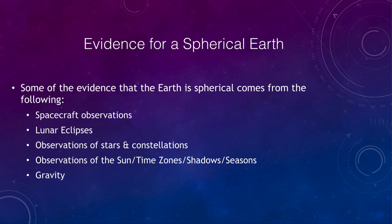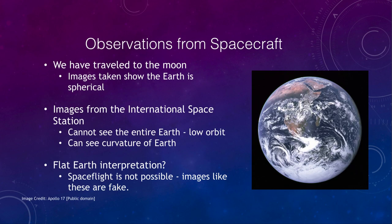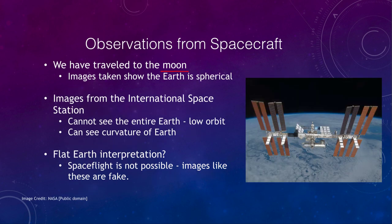Let's first look at what observations we have from spacecraft — this is some of the most direct evidence. We traveled to the moon back in 1969, and images show that the Earth is spherical. The astronauts could watch the Earth rotate and see different sections of it — the Earth was clearly not a flat disk. We also have images from the International Space Station. It is in a low orbit, but you can see the curvature of the Earth off in the distance.